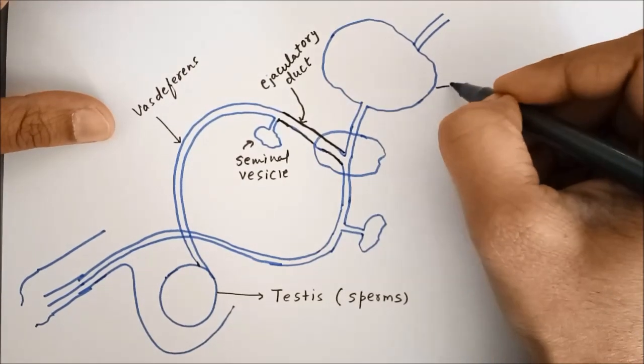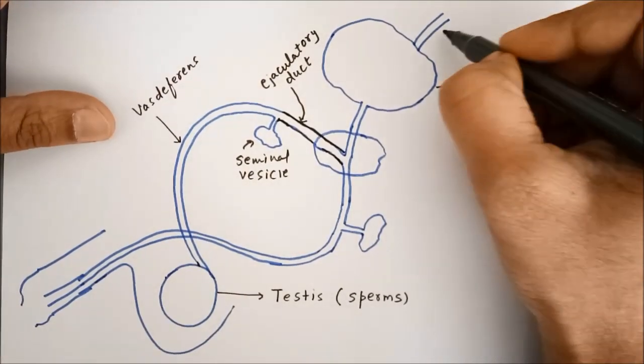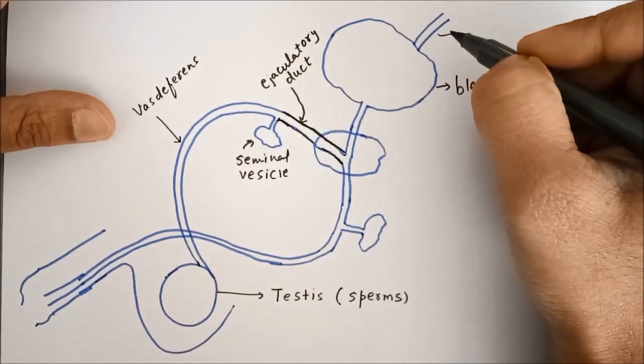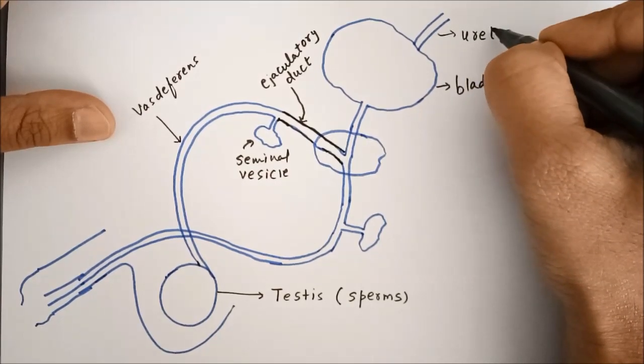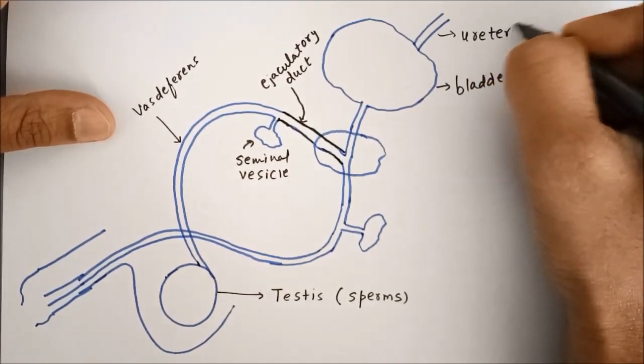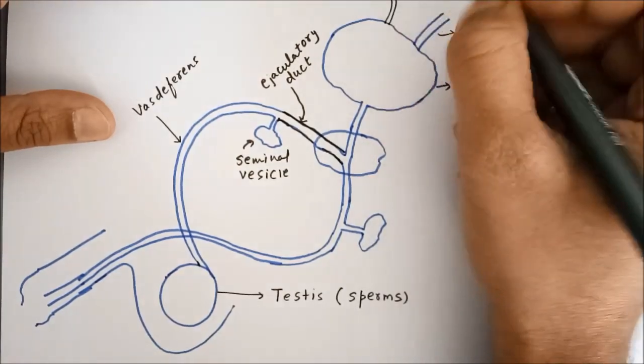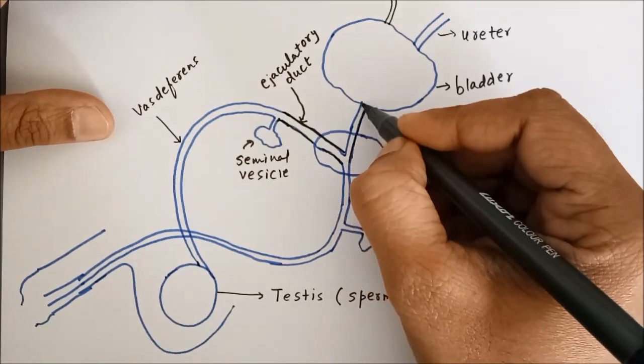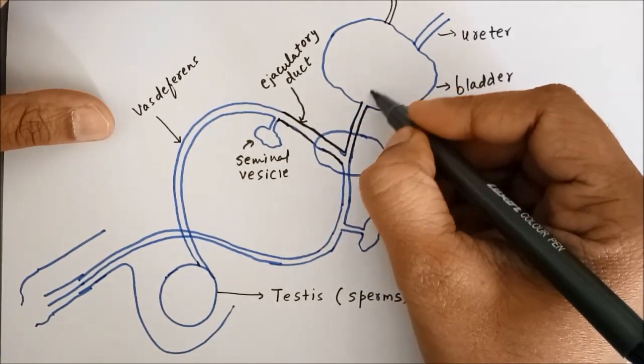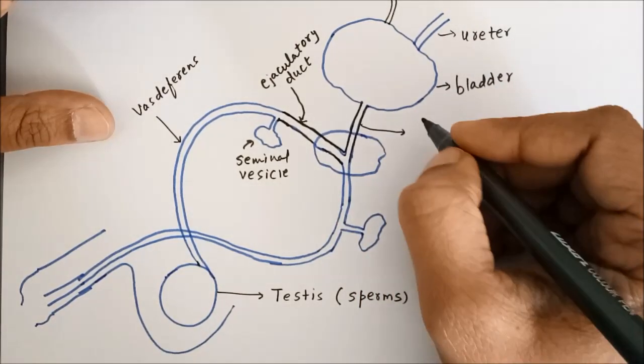This is urinary bladder. These are ureters which come from the kidney. We have two ureters that come from the kidney. This is bladder. This pipe which collects the urine is called urethra.